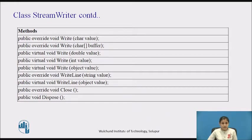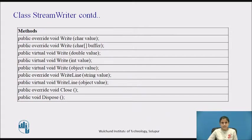The Write method with an object parameter writes the text representation of an object to the text stream. The WriteLine method with a string parameter writes a string to the stream followed by a line terminator. The Close method closes the current StreamWriter object and the underlying stream. The Dispose method releases all resources used by the text writer object.